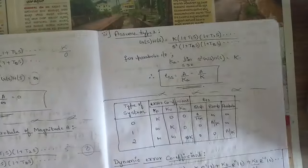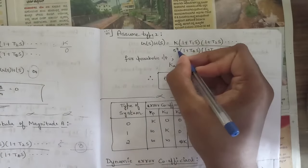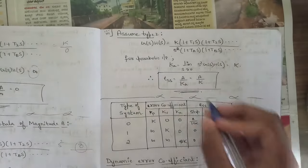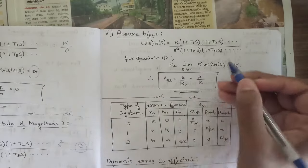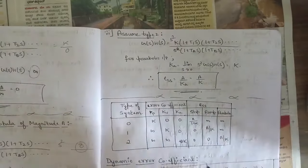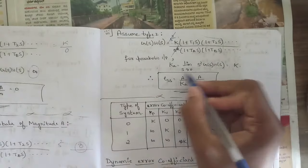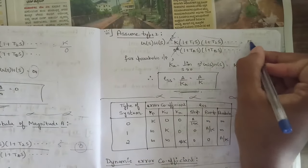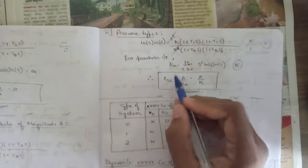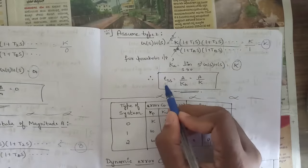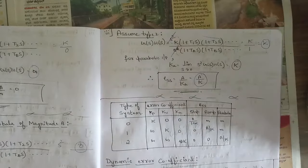For a Type 2 system with parabolic input, j = 2, so the denominator has s squared. The expression ka = limit as s tends to 0 of s²·k/s² — both s squared terms cancel, leaving k/1 = k. So ka = k, and the steady state error ess = a/k.